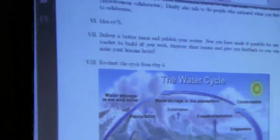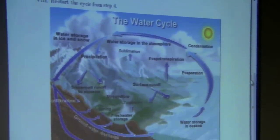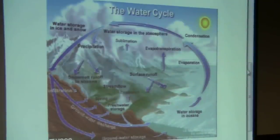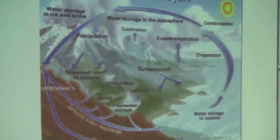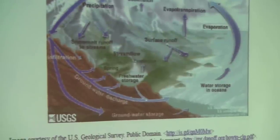Number seven: deliver a better lesson plan and publish your review. Now you've made it possible for any teacher to build off your work, improve their lessons, and give you feedback so you can make your lessons better. Number eight: restart the cycle from step four. As an illustration, another way to think about this is like a water cycle — you make the lesson plans, they go up, you teach them, then you put the new version with the review back in. That image is public domain from the U.S. Geological Survey.